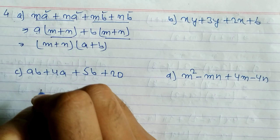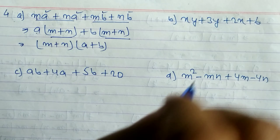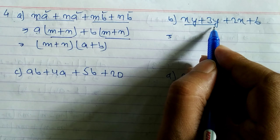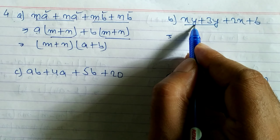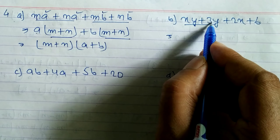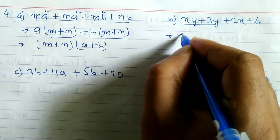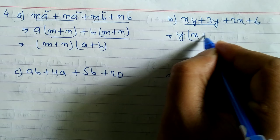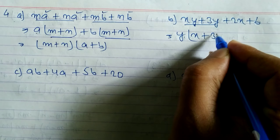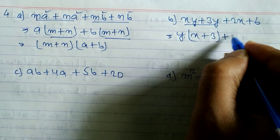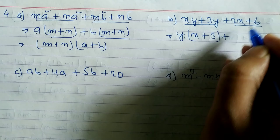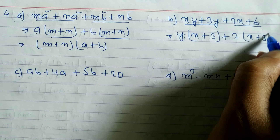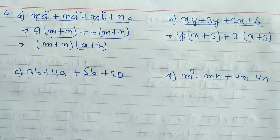Now look at question 4b. From the first two terms, y is common, remaining x plus 3; y is already common, remaining x plus 3. From the last two terms, 2 and 6 — common is 2, remaining x plus 3 (since 2 times 3 is 6). So the answer is (x plus 3)(y plus 2).